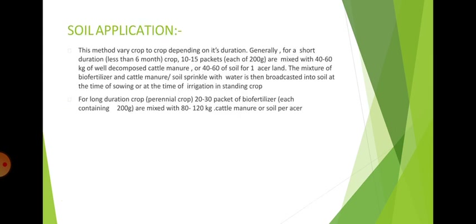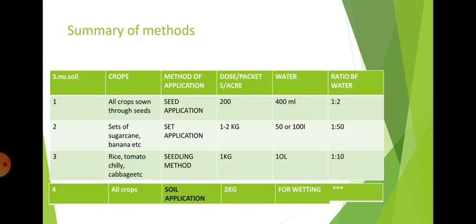For soil application, the method varies crop to crop depending on its duration. Generally, for a short duration crop of less than 6 months, 10 to 15 packets each of 200 grams are mixed with 40 to 60 kg of well-decomposed cattle manure or 40 to 60 kg of soil per acre. The mixture of biofertilizer and cattle manure, sprinkled with water, is then broadcast into the soil at the time of sowing or irrigation in standing crop. For long duration perennial crops, 20 to 30 packets each of 200 grams are mixed with 80 to 120 kg of cattle manure or soil per acre. A summary table shows the number, crops, methods of application, dose per packets per acre, and quantity of water.